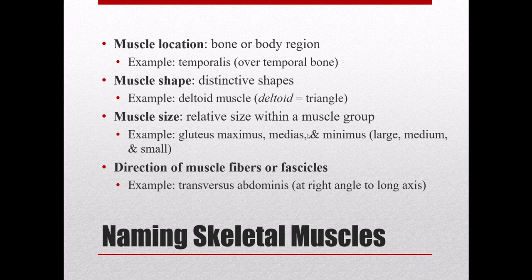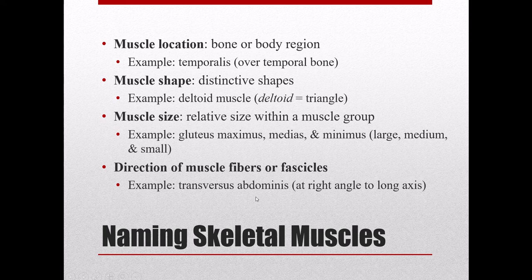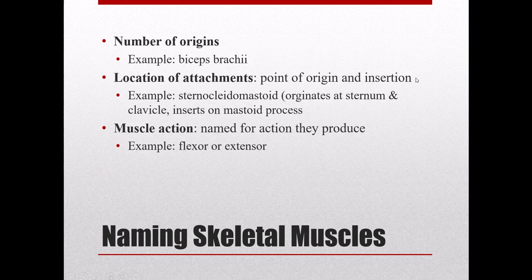We can compare relative sizes within a muscle group: gluteus maximus, medius, and minimus — basically large, medium, and small. We can also look at the direction of the fibers or fascicles, usually in relation to the long axis of the body. For example, the transversus abdominis — transversus means at right angles to the long axis, so horizontal — and abdominis gives us the body region. That one name tells us both fiber direction and location. We can also determine the number of origins: the biceps brachii has two origins and is in the brachial region.